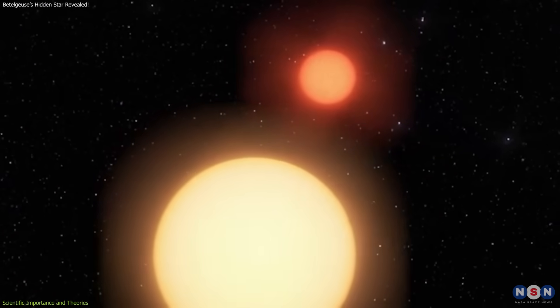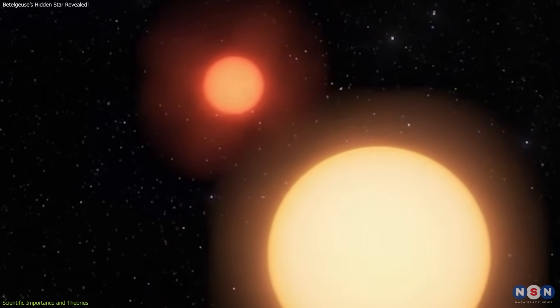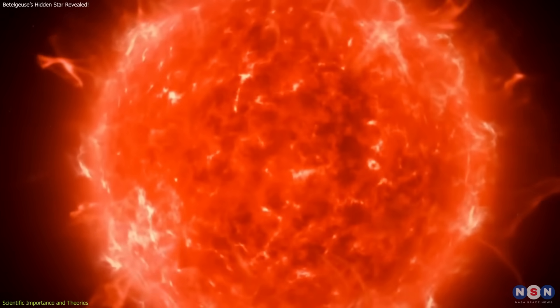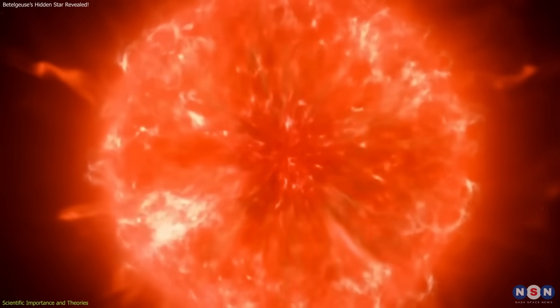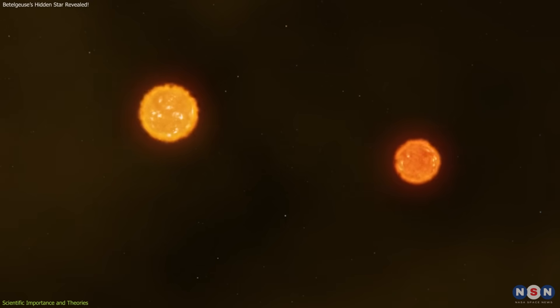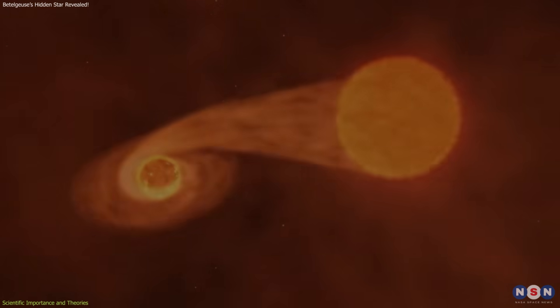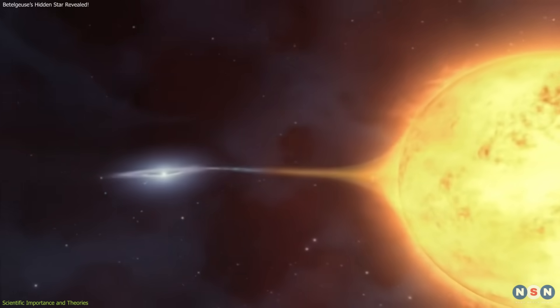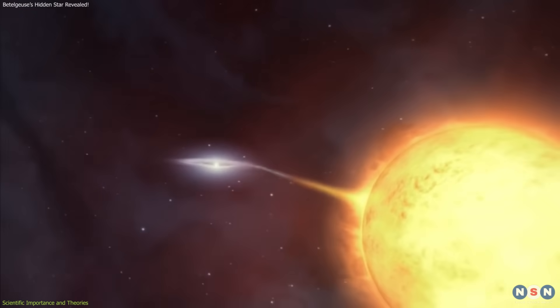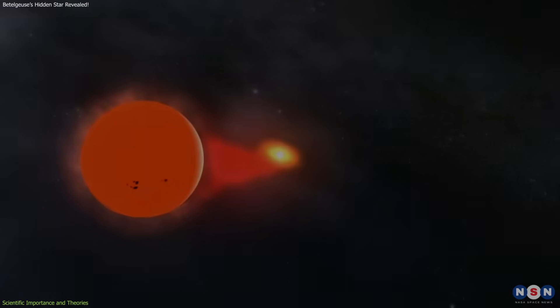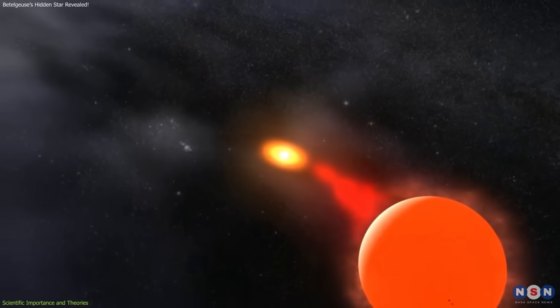The presence of a companion also changes how we think about Betelgeuse's evolution. Red supergiants are rare, massive stars near the end of their lives. Many exist in binary systems, where interactions shape their fates. Material can flow between the stars, winds can be altered, and orbital decay can lead to engulfment. If it truly has a partner orbiting within its atmosphere, the interaction is already reshaping its late-life behavior.